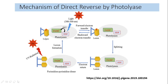The photolyase finds the lesion and binds with it. The MTHF donates energy to FAD to reduce it into FADH2 after absorbing a wavelength of 300 to 500 nanometers. Upon excitation, MTHF transduces the energy of photons into FAD, converting it into FADH2, which then forwards this energy to the dimer to break it open. This energy breaks the dimer, making the lesion revert to its correct form, and the DNA damage is reversed using this light mechanism.